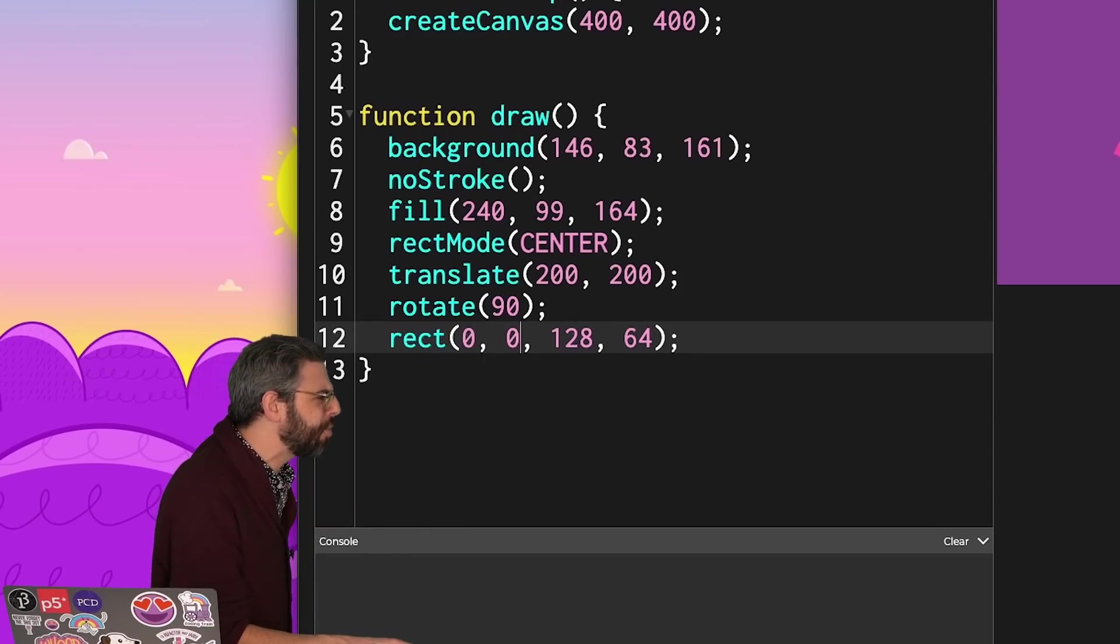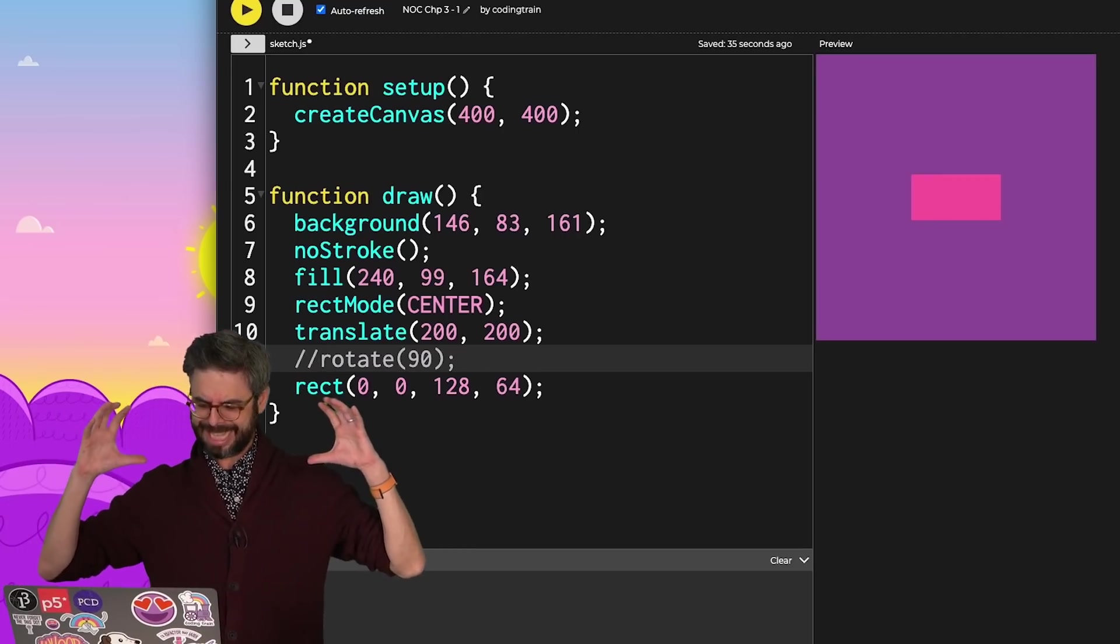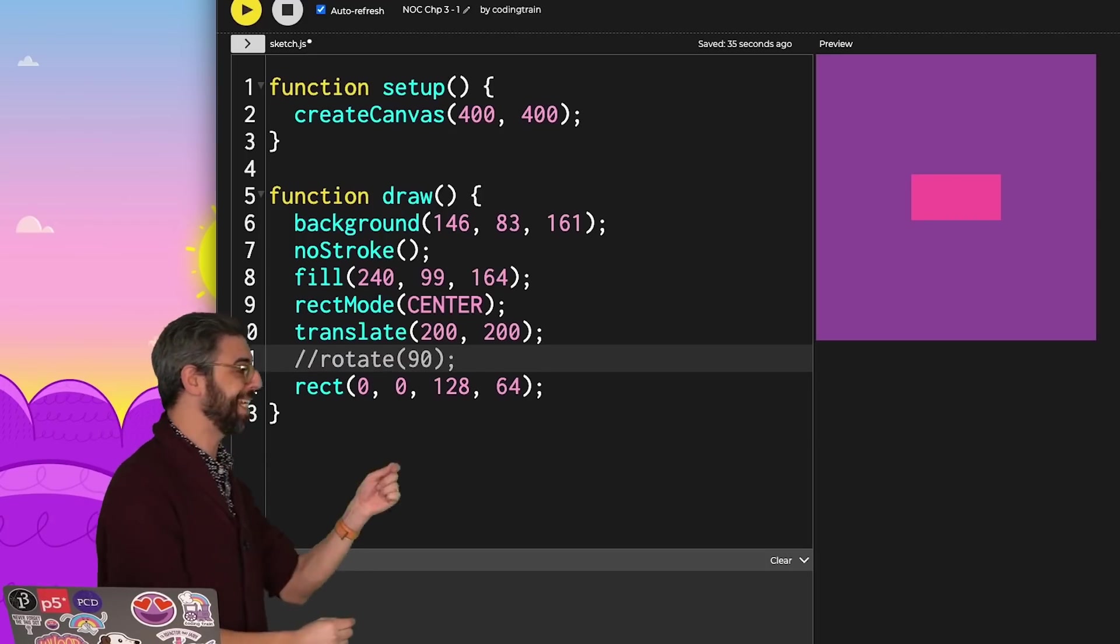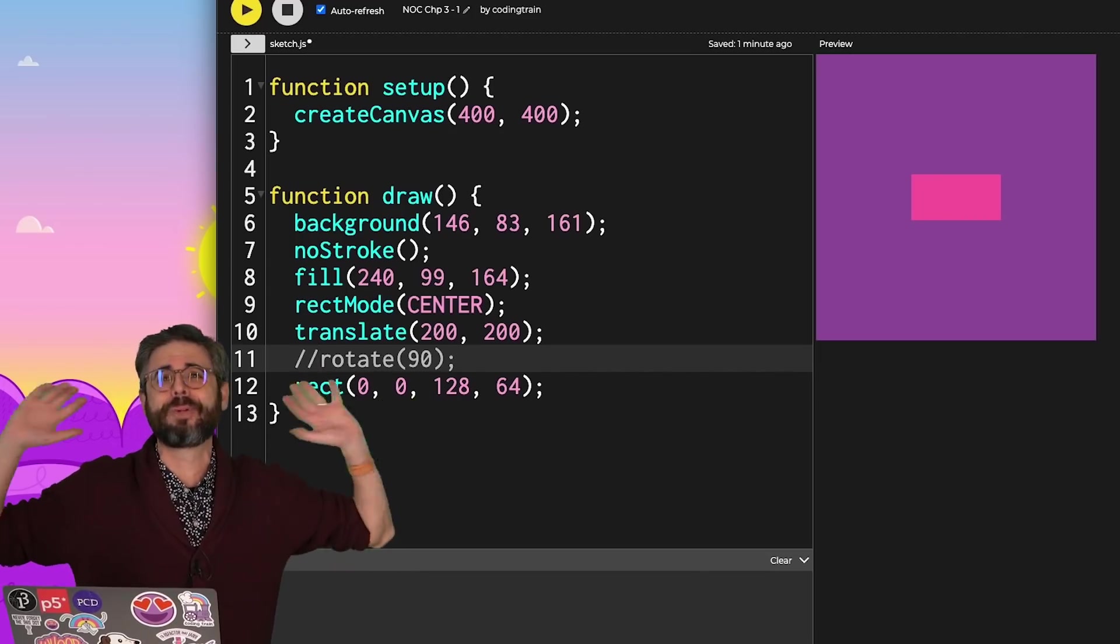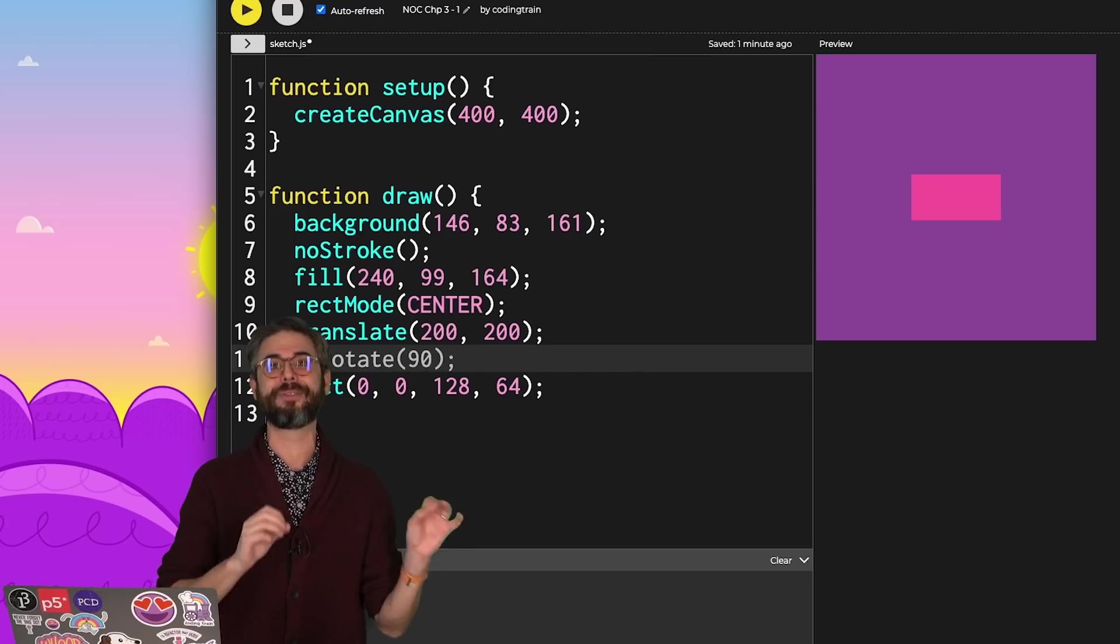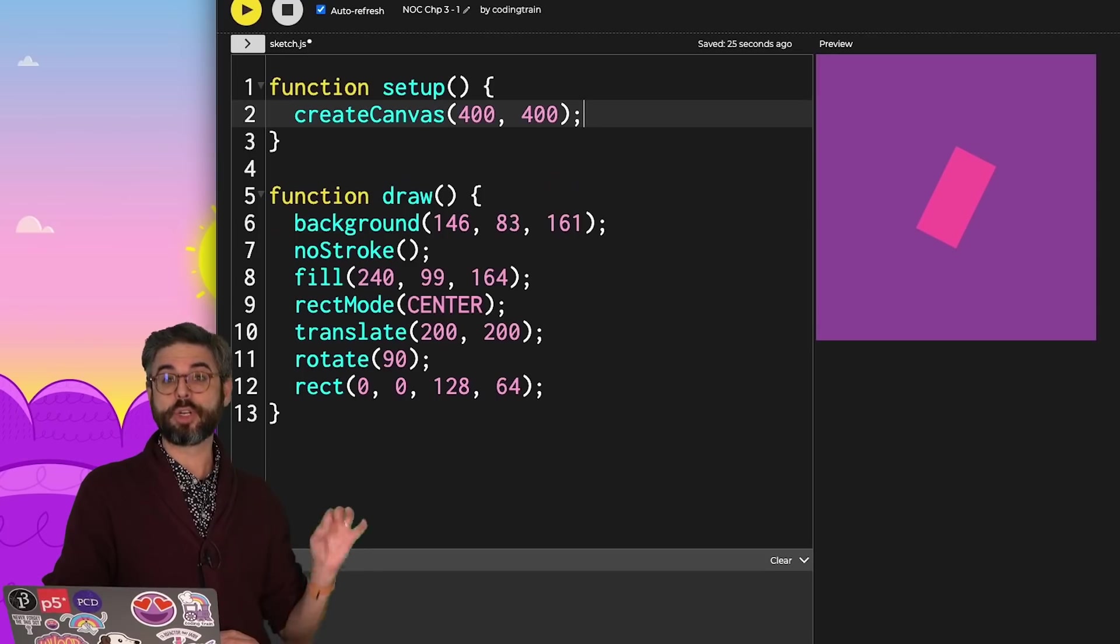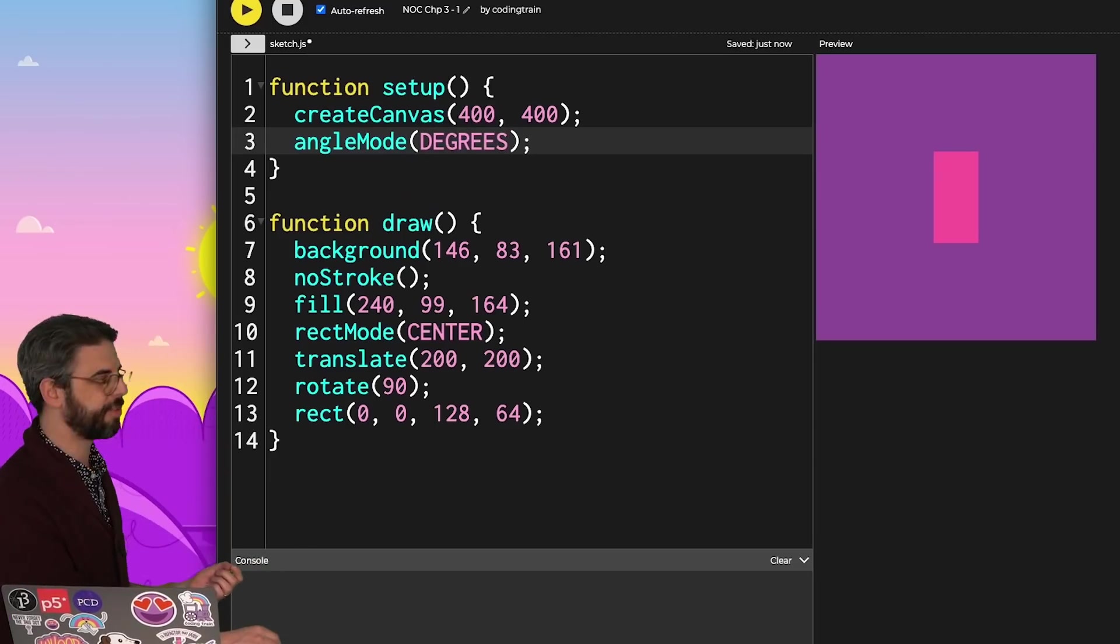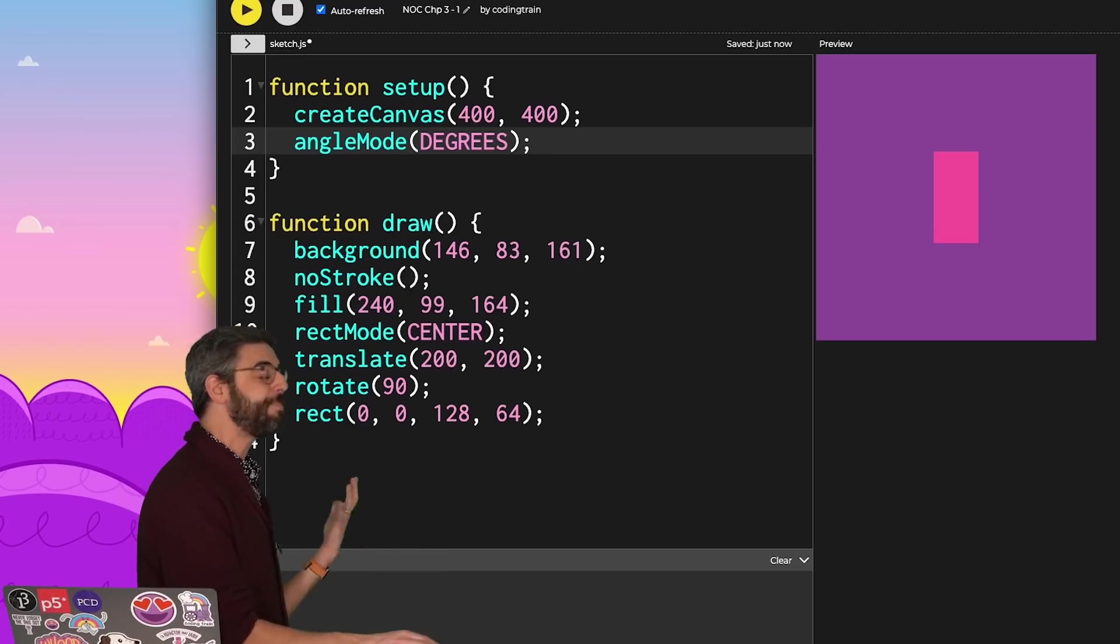Once I've translated to 200, 200, I need to then draw the rectangle at 0, 0 because the origin point is now at 200, 200. And then I'm rotated by 90 degrees. That doesn't look like 90 degrees, right? If the rectangle is like this at 0 degrees, then it should be perfectly vertical at 90 degrees. Well, the reason is natively the computer, the JavaScript, P5.js, whoever is reading our instructions is thinking in terms of radians. If I do want to work with the unit of measurement degrees in my code, then in setup I can change the mode of P5.js to angleMode DEGREES.